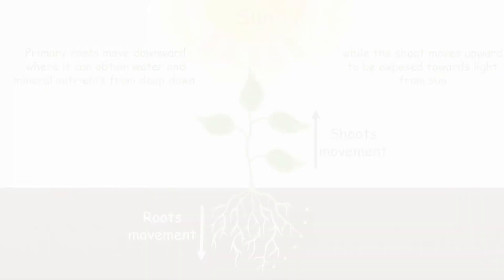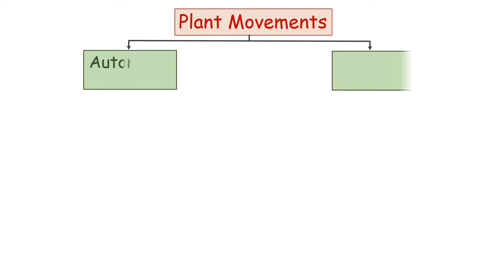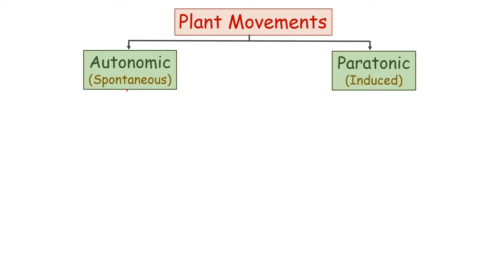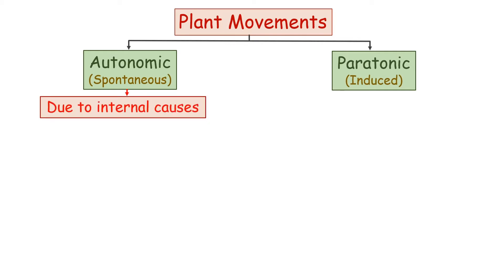There are two types of plant movements: autonomic movements and paratonic movements. Autonomic movements are spontaneous movements due to internal causes. Paratonic movements are induced movements due to external causes.